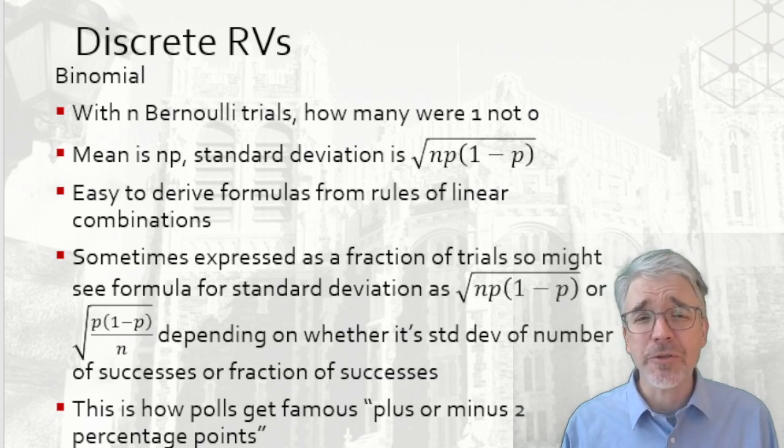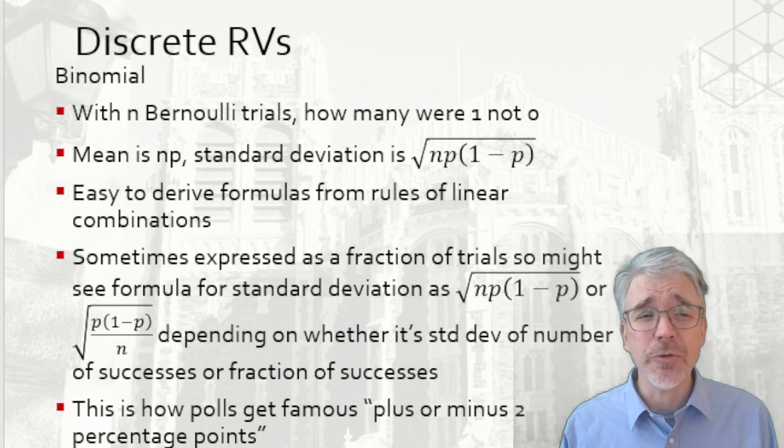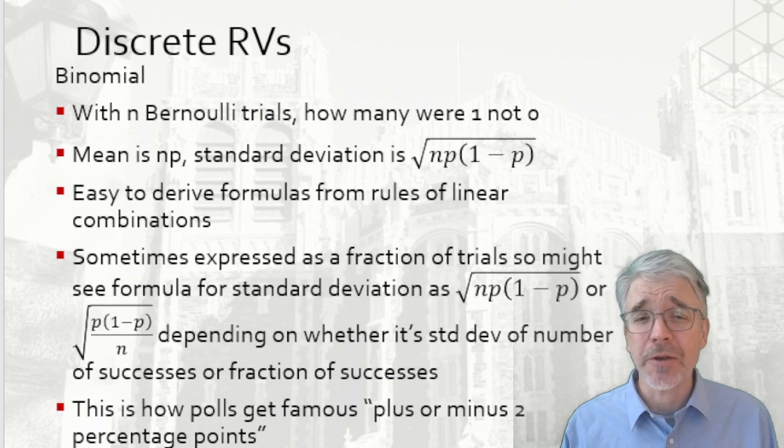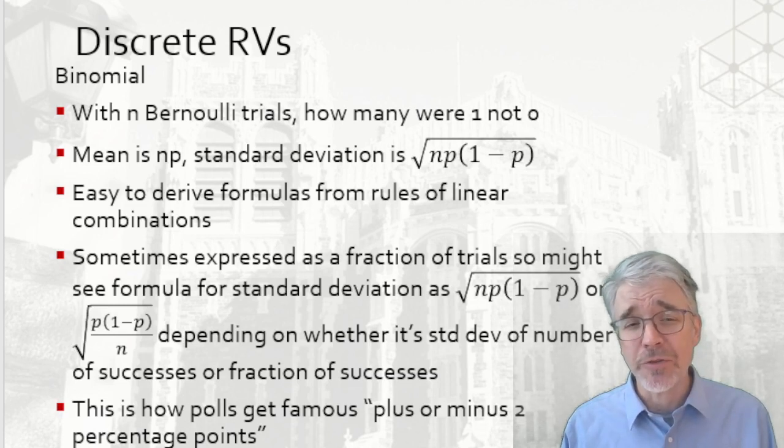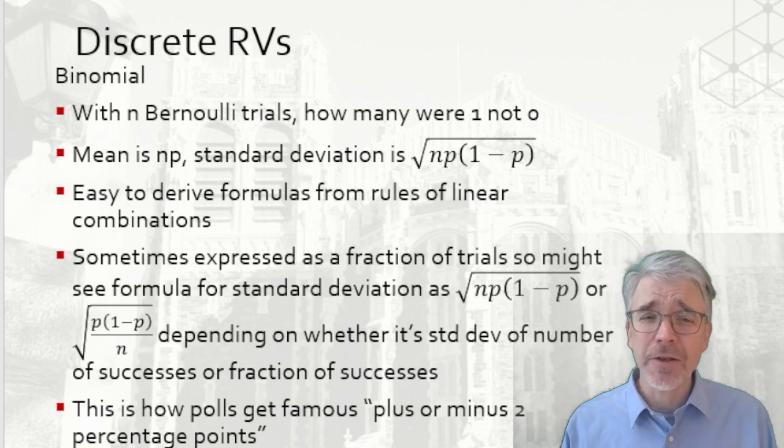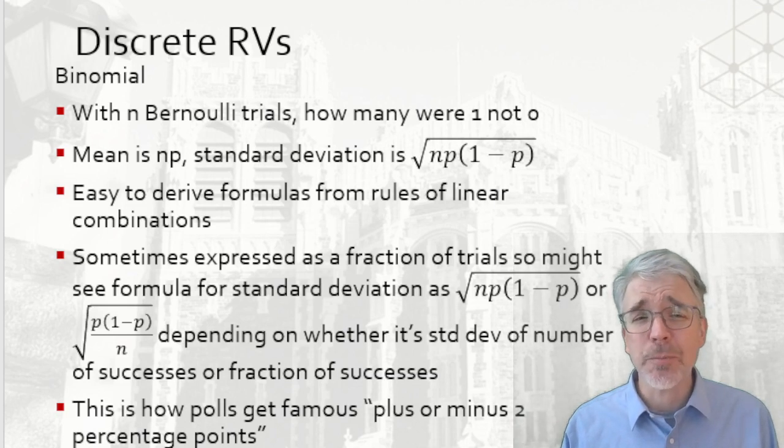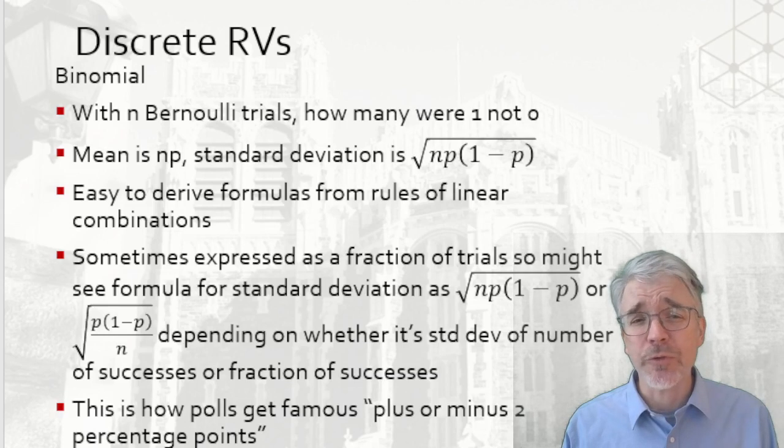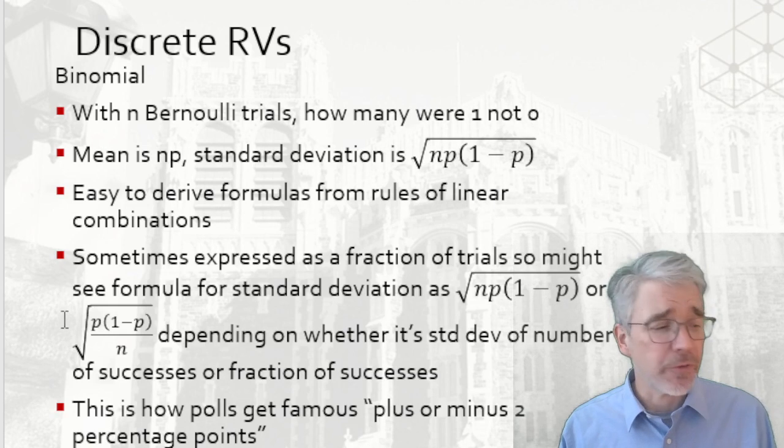One of the common occurrences where we see binomial distributions used is looking at political polls. People say they'd vote for some candidate or support some issue, or not. Define voting one way as a success, voting the other way as a fail. Again, it doesn't really necessarily matter which one you count as a success. But that's where the plus or minus two percentage points stipulation comes from the formulas for linear combinations. In the notes, I go through more detail, just make sure you understand that.